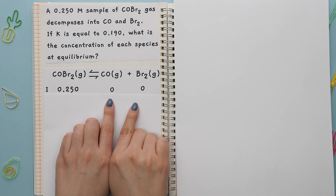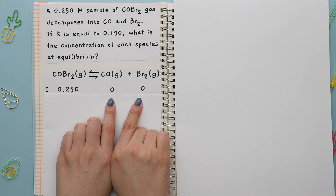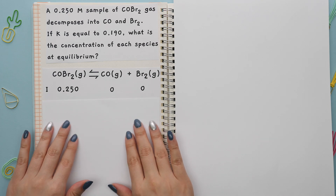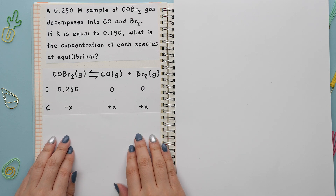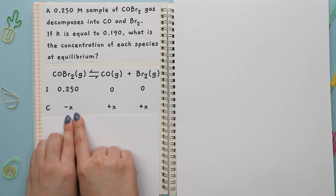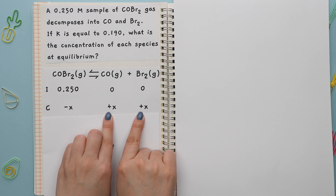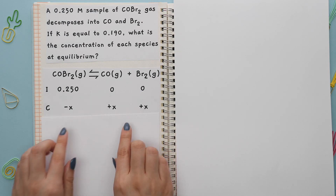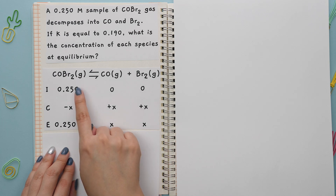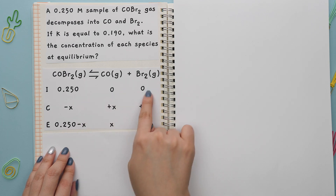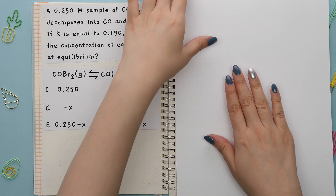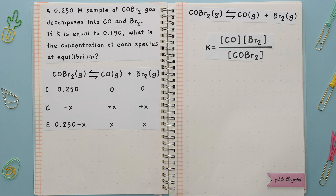The initial concentrations of the products are not given, so we label them as 0 for each. The C is the change, which we don't know, so we label it X. Reactants are negative since they are being used up, and products are positive since they are being produced. The E represents the reaction at equilibrium, so we add rows I and C together to get E. Now that the ICE table is built, we can move on to writing the equilibrium constant K.